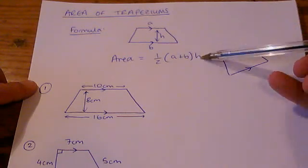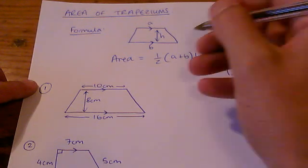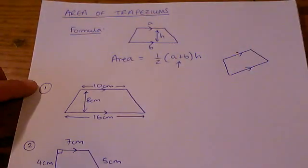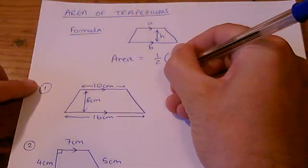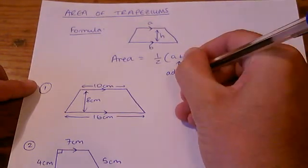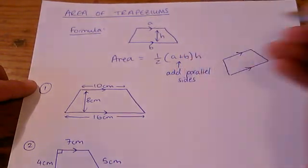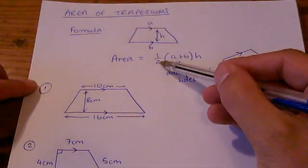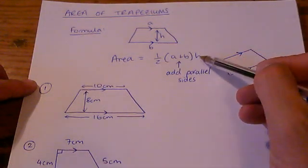The formula itself is half brackets a plus b close brackets times h. The way I normally tell people to do this is to add the parallel sides, that's what a and b are, they're the parallel sides, and then half that number and then times it by the height.